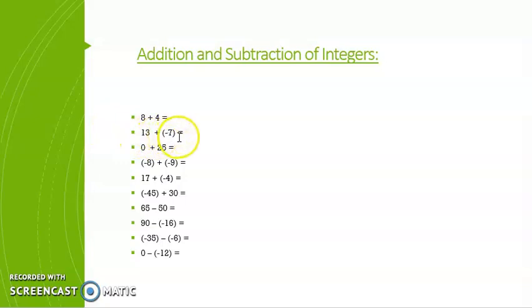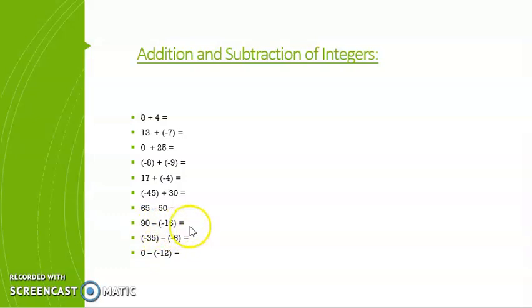For 13 plus minus 7: when we add two positive integers the answer is positive. One positive and one negative — if the positive integer is greater the answer will be positive; if the negative integer is greater the answer will have a negative sign. For subtraction: if both are positive the answer is positive. If one is positive and one is negative, when we open the bracket, minus and minus becomes plus — for example, 90 minus negative 16 becomes 90 plus 16. For minus 35 and plus 6, minus and plus means we write the sign of the greater number.